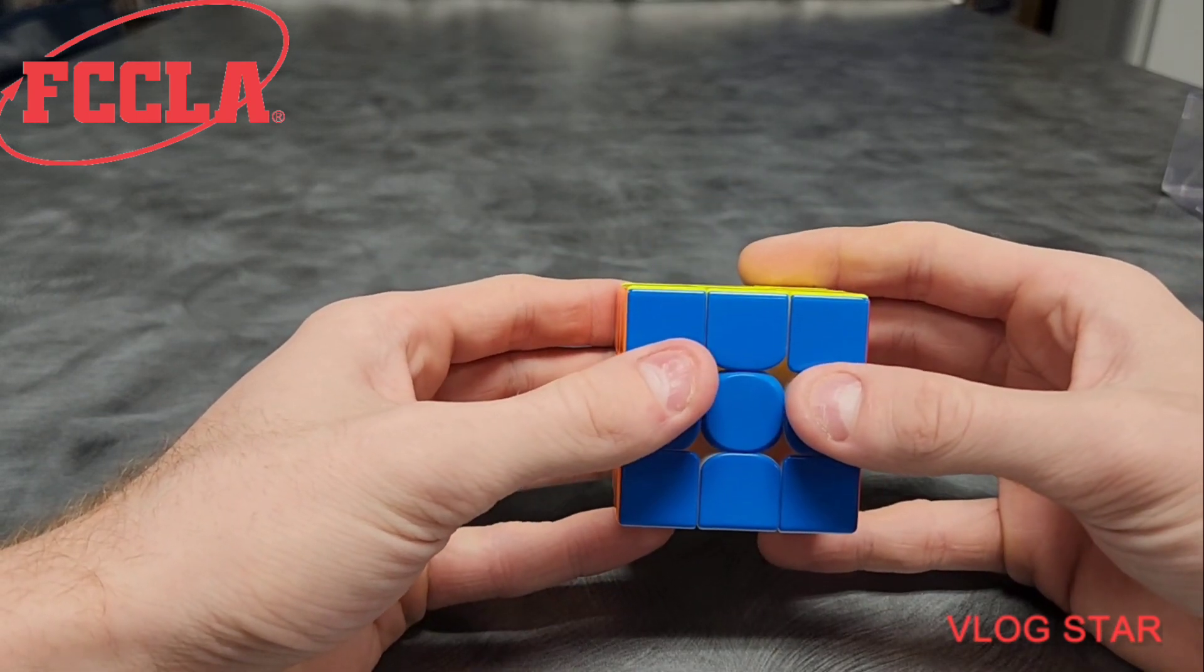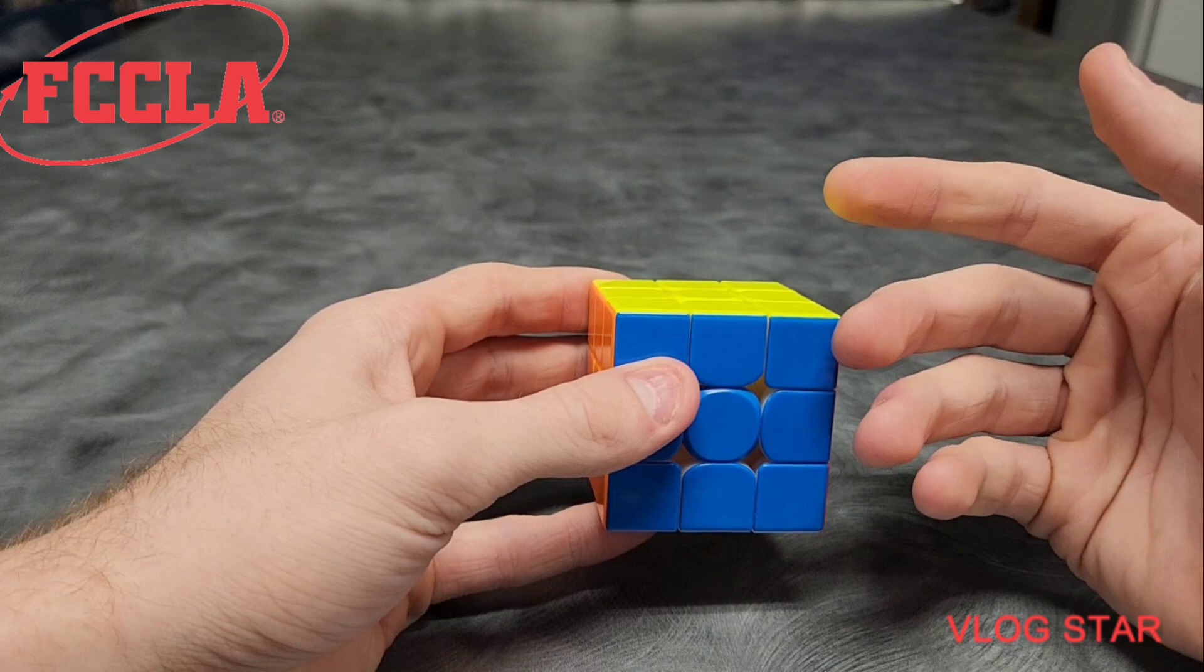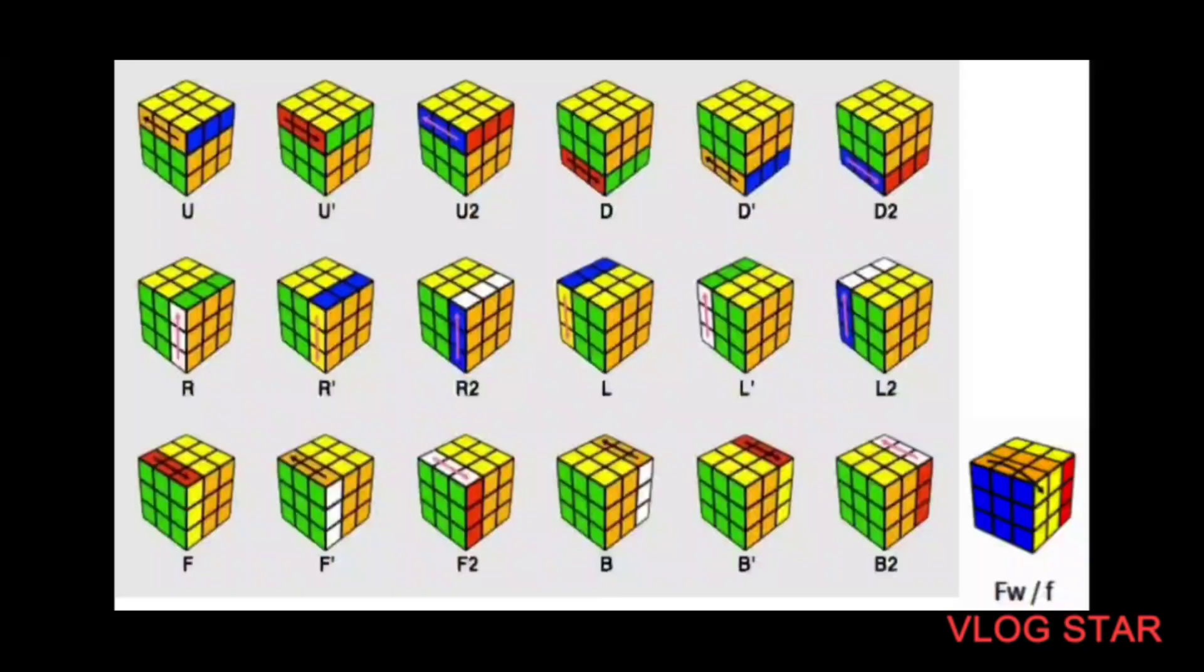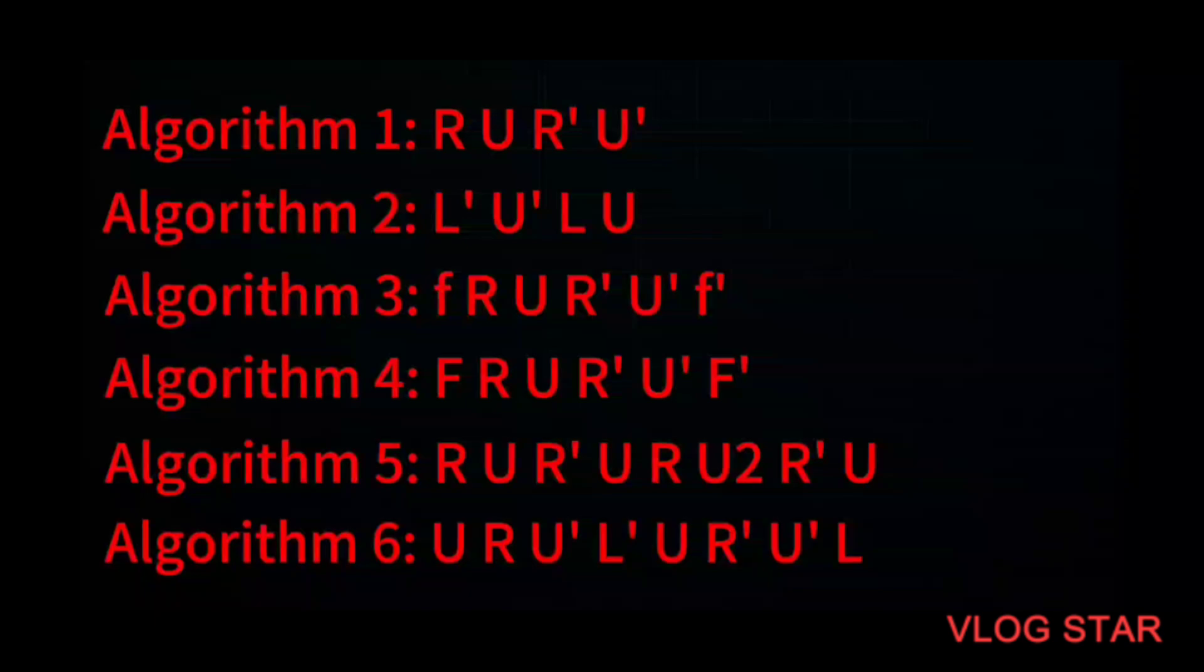There are a couple things you're going to need to know. I'll put them on screen, pause and take a moment to write them down and memorize them. This is cube notation. This is how you turn the cube, and how it's read. And these are the algorithms that you are going to need to know.